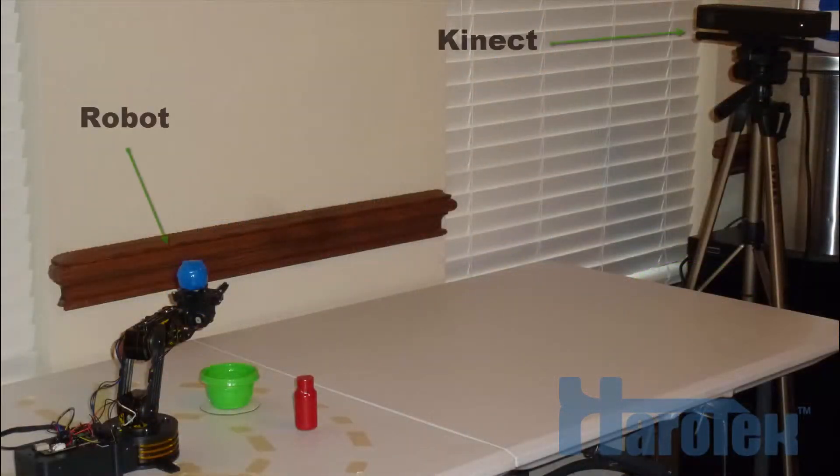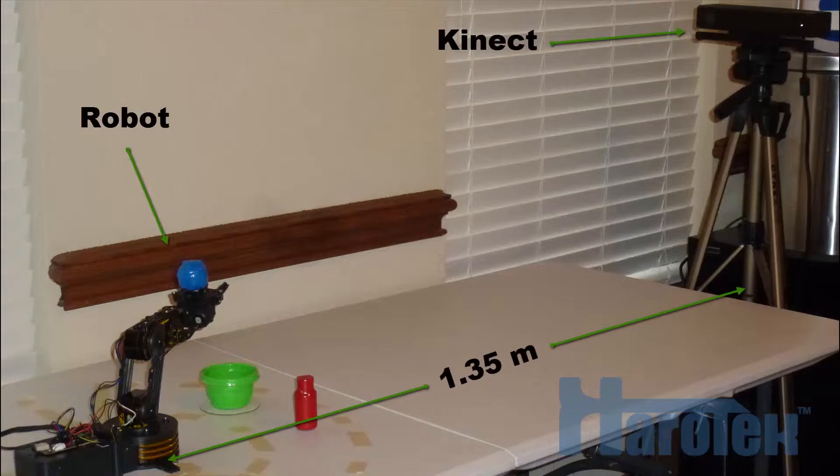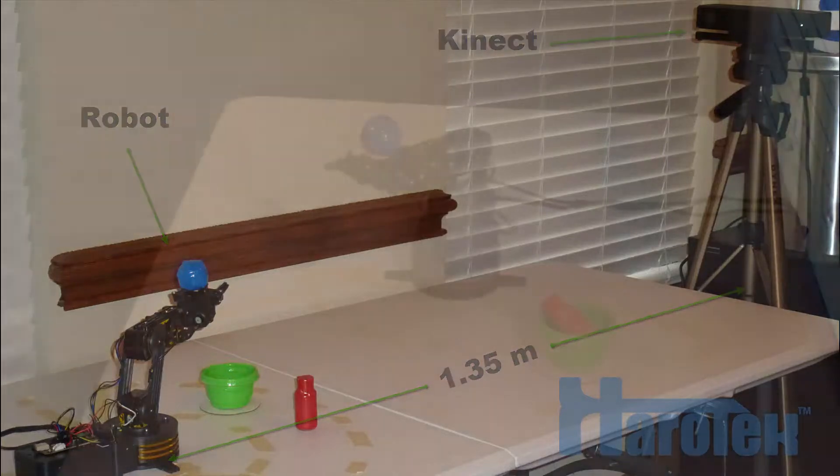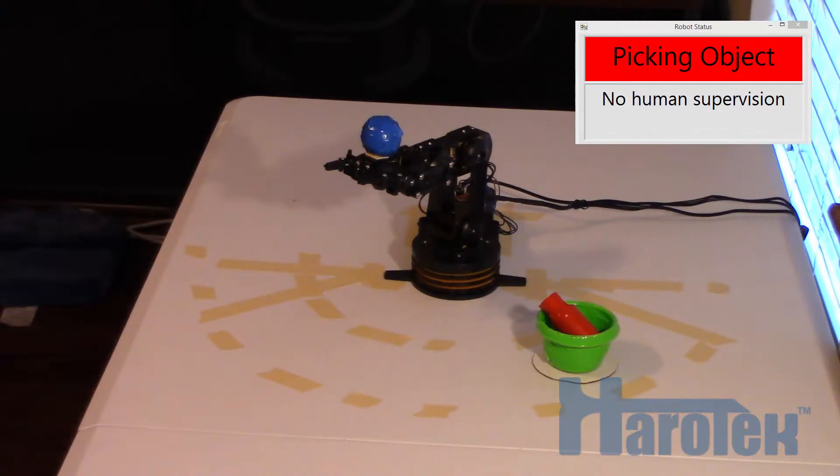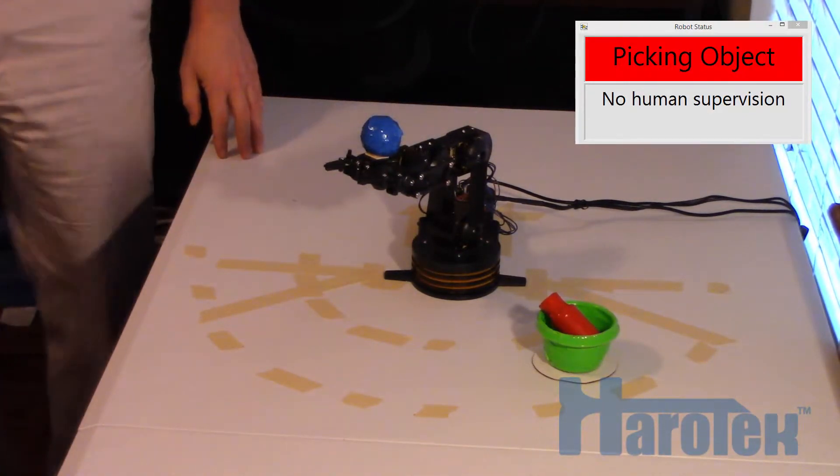The robot is installed on a table at a distance of 1.35 meters from the Kinect. After starting the VI, the computer will run independently from any human intervention for the rest of the video.